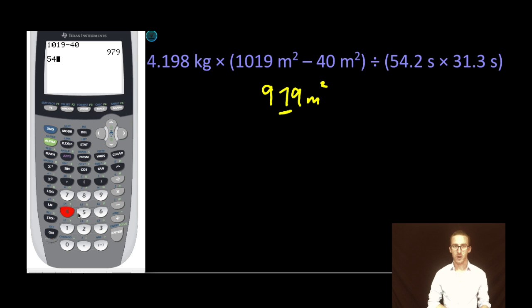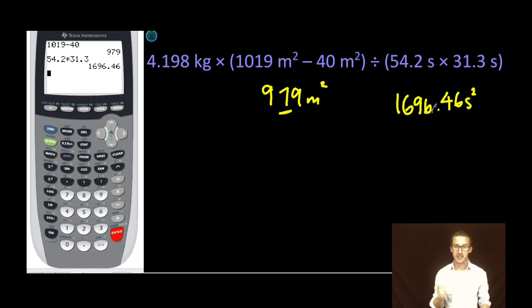I also have to do 54.2 times 31.3. And here I get 1,696.46 seconds squared. As I think about this, it's multiplication. So it's fewest total. This measurement has three sig figs. This one also has three sig figs. So if I were to just do this operation, I would round this number to this point here, three significant figures.